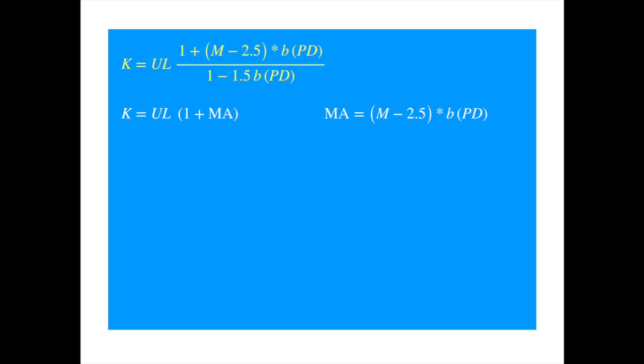For maturities shorter than 2.5, MA will be negative, meaning the capital requirements will be lower than the unexpected loss. Whereas for maturities higher than 2.5, the capital requirements will be higher than the unexpected loss. Which is to be expected, because we know the base formula was calibrated based on a maturity of 2.5. And as we said just now, the adjustment in the denominator that we have dropped for now will then scale this 2.5 to 1 year.